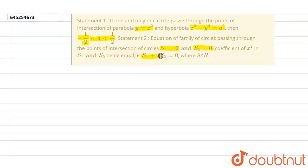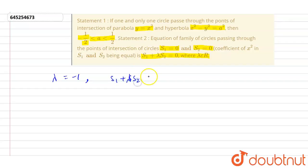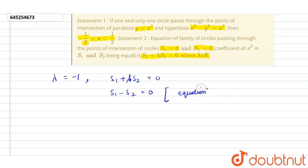Statement 2 is false. For lambda equals minus 1, the condition S1 plus lambda S2 equals 0 becomes S1 minus S2 equals 0, which is an equation of a line. But it is stated that it must be an equation of a family of circles. So from here we can conclude that Statement 2 is false.